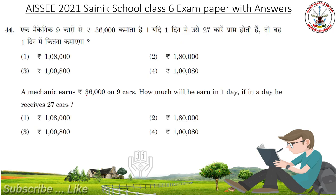A mechanic earns 36,000 on 9 days. How much will he earn in one day if in a day he receives 27 cows? Answer: 1,008,000.